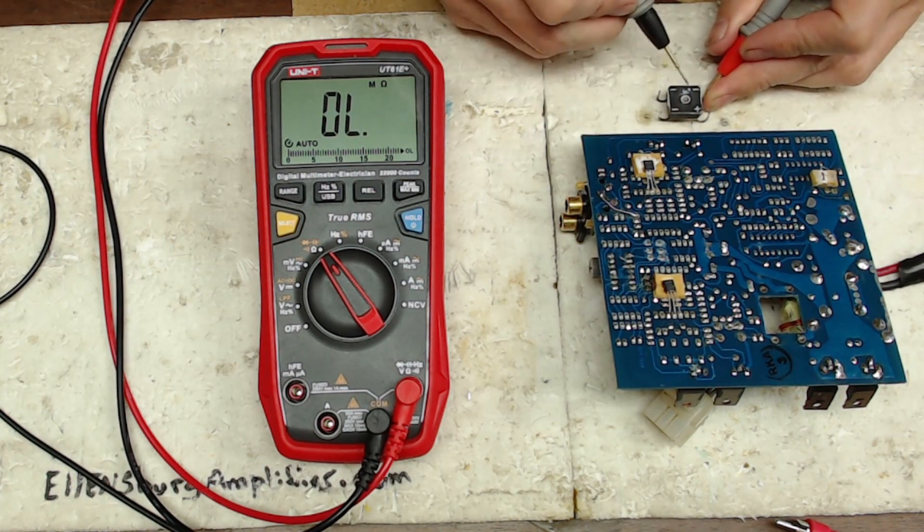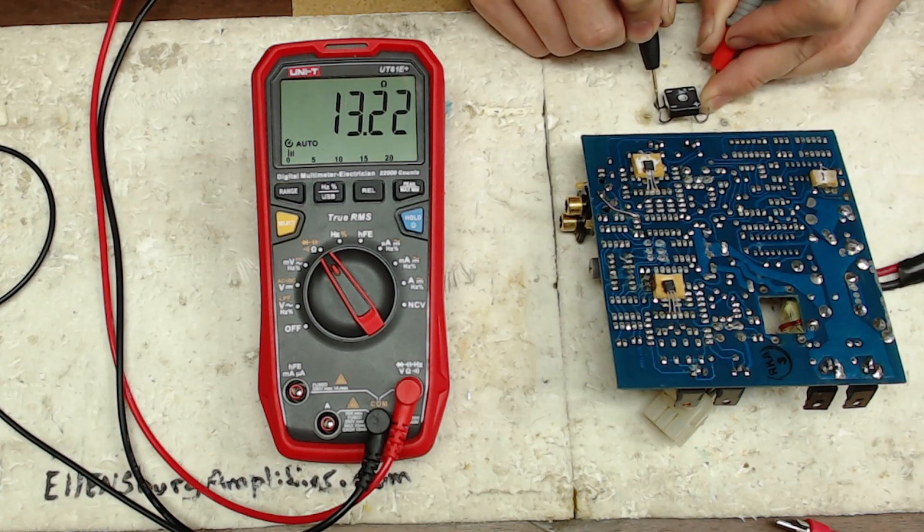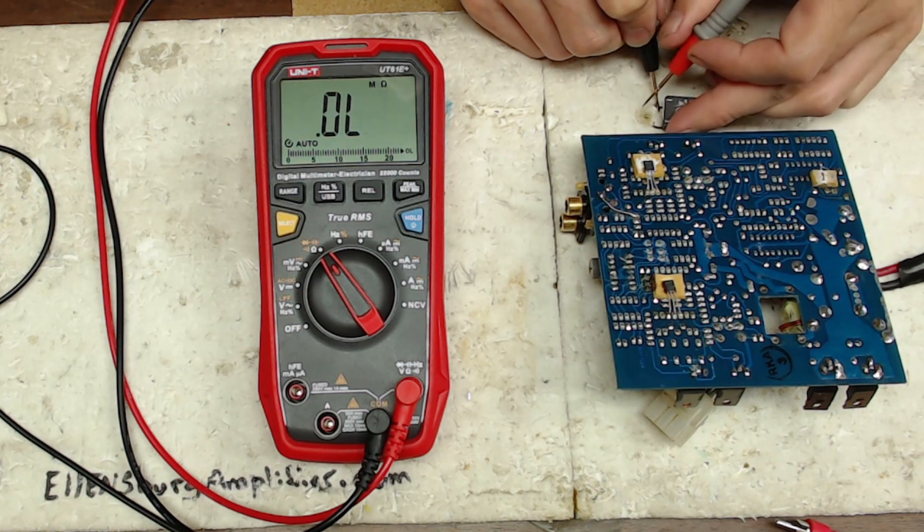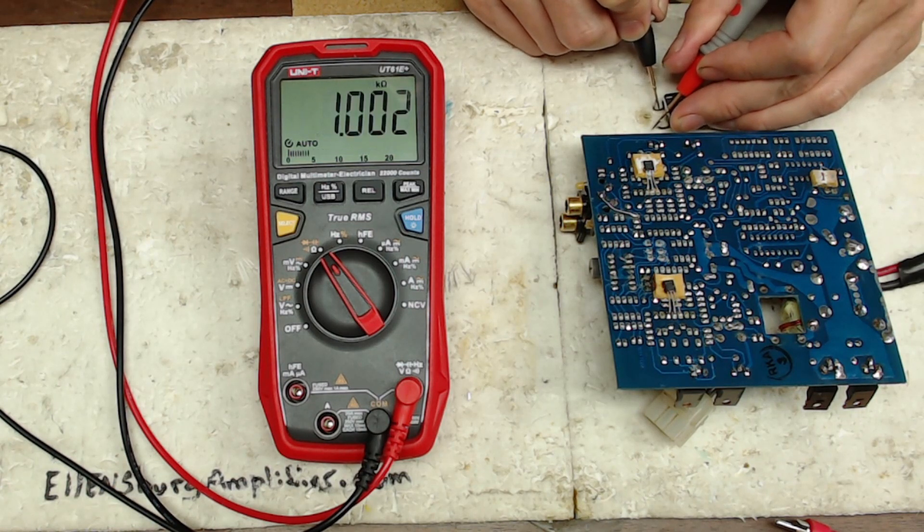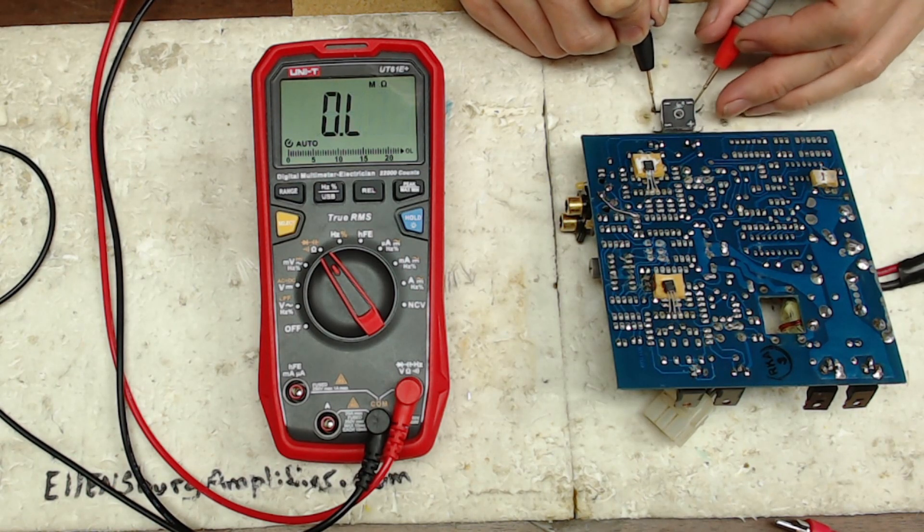So if you take a resistance value of this rectifier, there's my short for you. So this rectifier has a short.